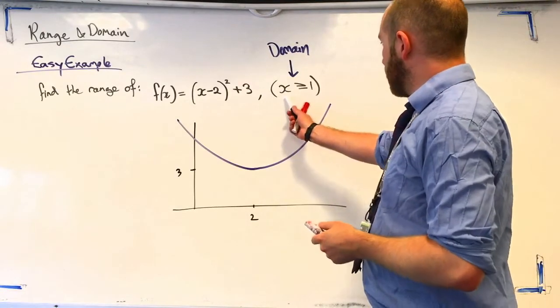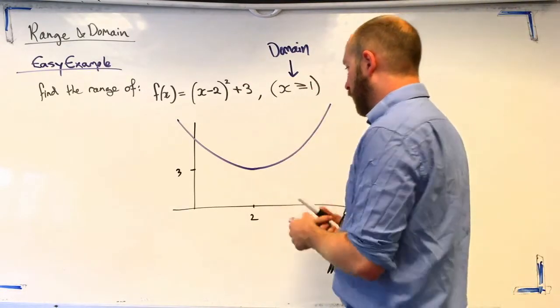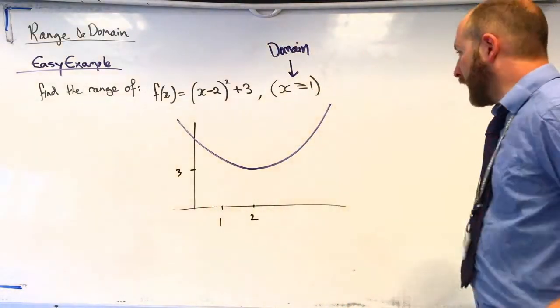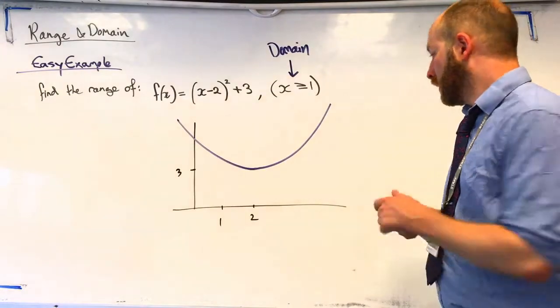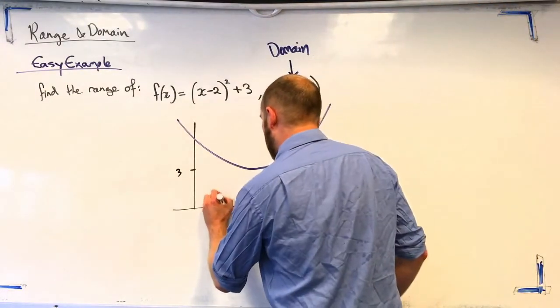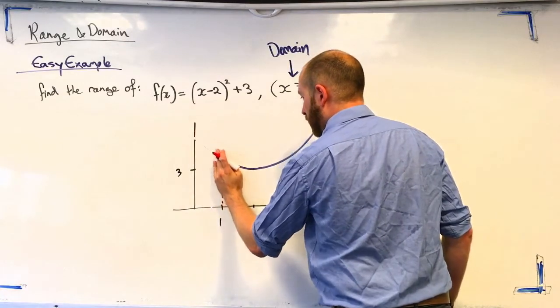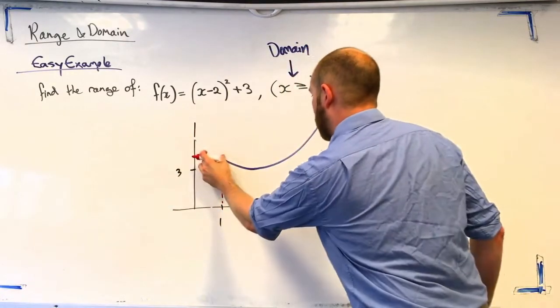And we're told here a constraint is x has got to be greater than or equal to 1. So, if I put 1 in here as well. What that means is we can just forget all the x values less than 1. So, dotted line up to there. And we cross this out, we'll literally just erase it. Cool.